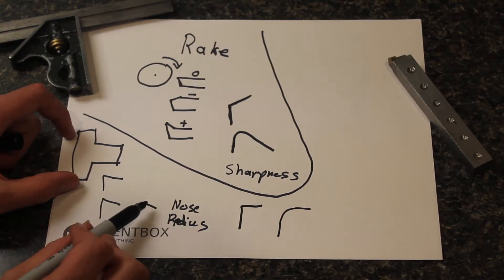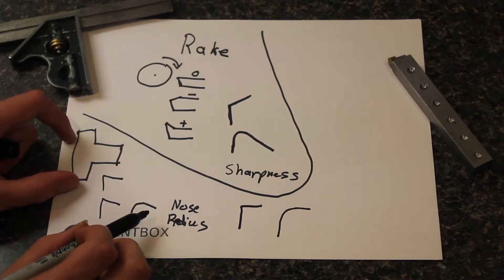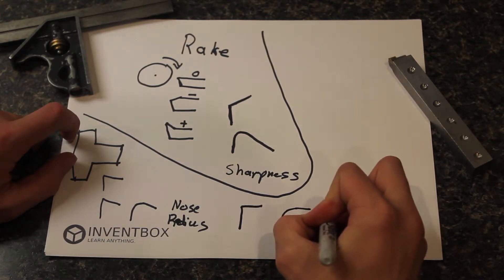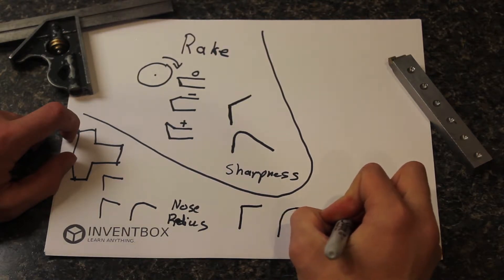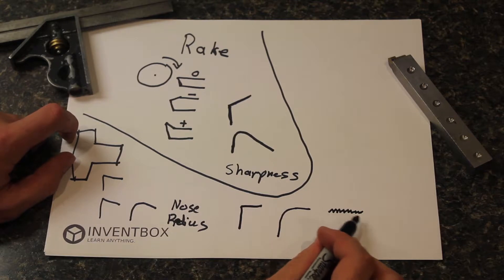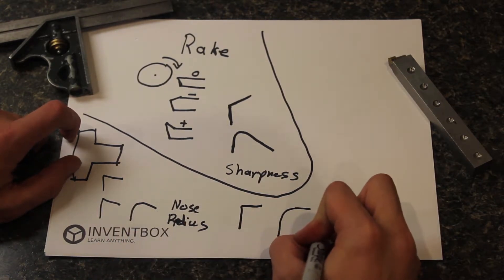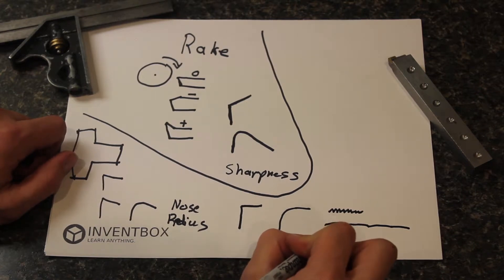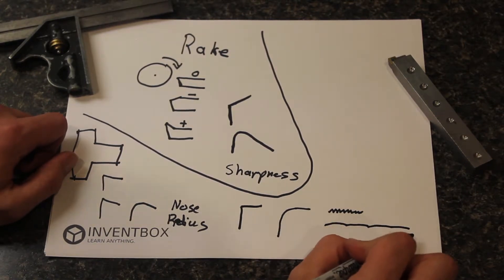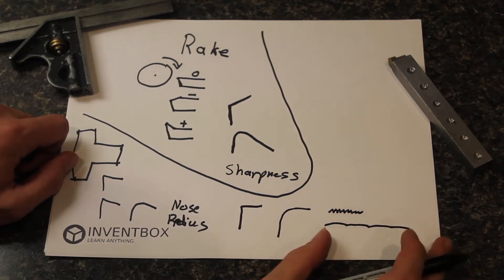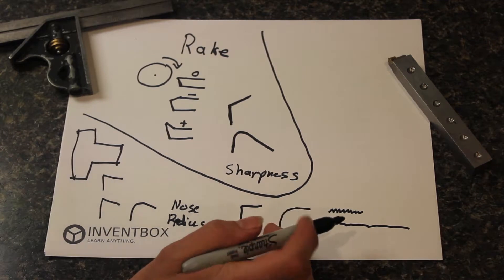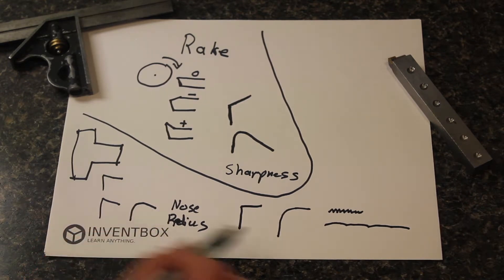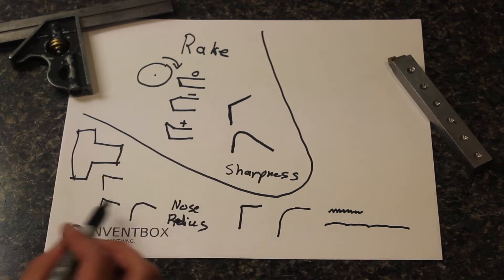So that's the advantage of having a small nose radius tool — you get sharper corners. But the advantage of a large nose radius tool is the surface finish. Whenever you use a tool with a small nose radius, your surface finish is going to have lots of little bumps in it as you feed along. But with a large nose radius, it's going to be more gradual. So normally a large nose radius is going to give you a better surface finish than a sharp nose radius tool.